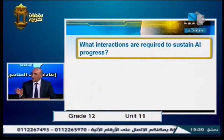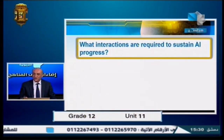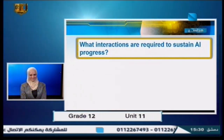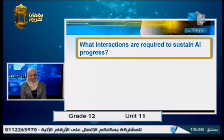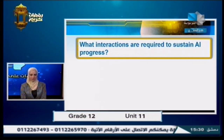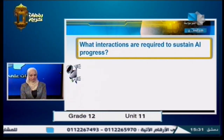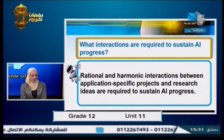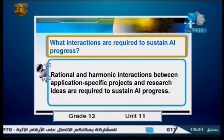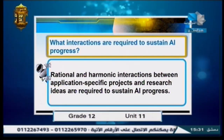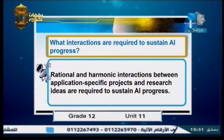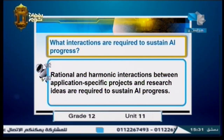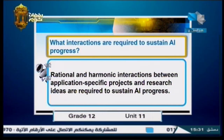What interactions are required to sustain AI progress? To keep making progress in the field of artificial intelligence, rational and harmonic interactions between application-specific projects and research ideas are required. By having this interaction between practical and theoretical aspects, we can ensure that AI will be more advanced in the future.